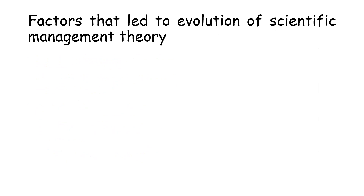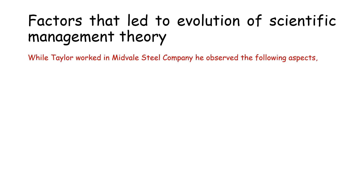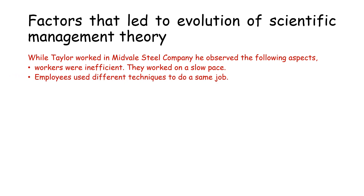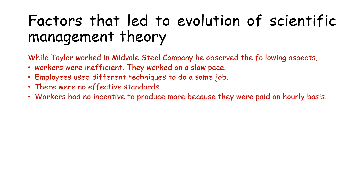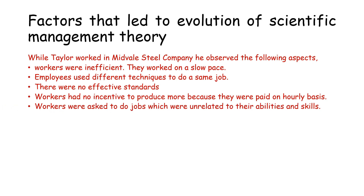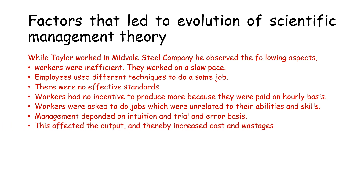Let us understand the various factors that led to the evolution of scientific management theory. While Taylor worked in Midvale Steel Company, he observed the following aspects: workers were inefficient and worked at a very slow pace; employees used different techniques to do the same job; there were no effective standards; workers had no incentive to produce more because they were paid on an hourly basis. As a result, output was restricted. Workers were asked to do jobs unrelated to their abilities and skills, management depended on intuition and trial and error, which increased cost and wastages.